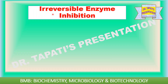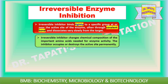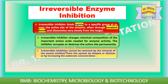In the irreversible enzyme inhibition process, the inhibitor binds tightly to a specific group at or near the active site of the enzyme, often through a covalent bond, and dissociates very slowly from the target. Irreversible inhibitors change the chemical composition of important amino acids required for enzyme activity. The inhibitor occupies or destroys the active site permanently. Irreversible inhibition cannot be reversed by removal of excess inhibitor by dialysis, dilution, or by increasing the substrate concentration.